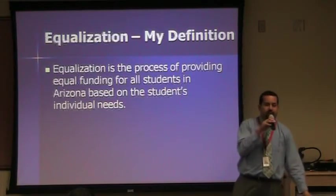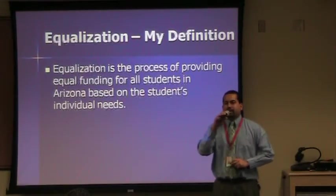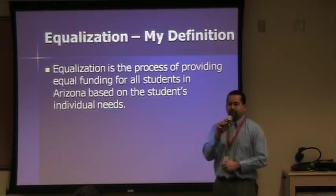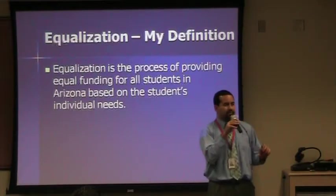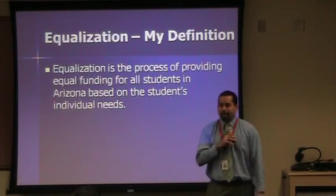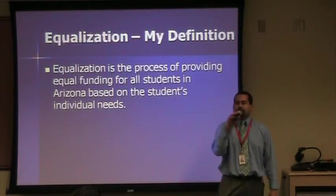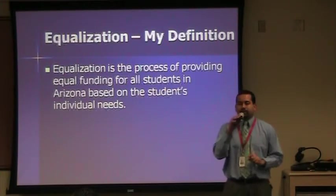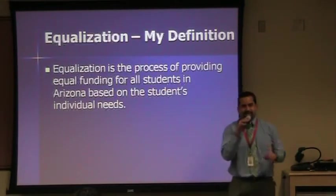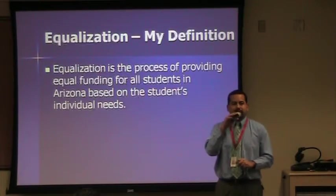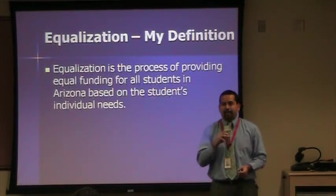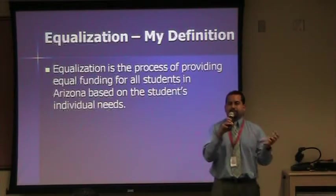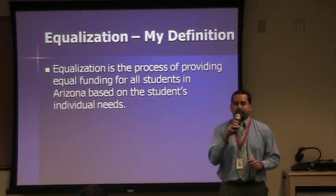Let's think about some examples of the different types of needs students can have in a school district that would require them to be funded at different levels. Special education is one of the main reasons why students are funded at different levels — it's divided into different groups, with different funding levels based on each student's special education needs. Gifted students are another example; we also treat gifted as a different type of special education, a different type of need. Grade level is also a good one.